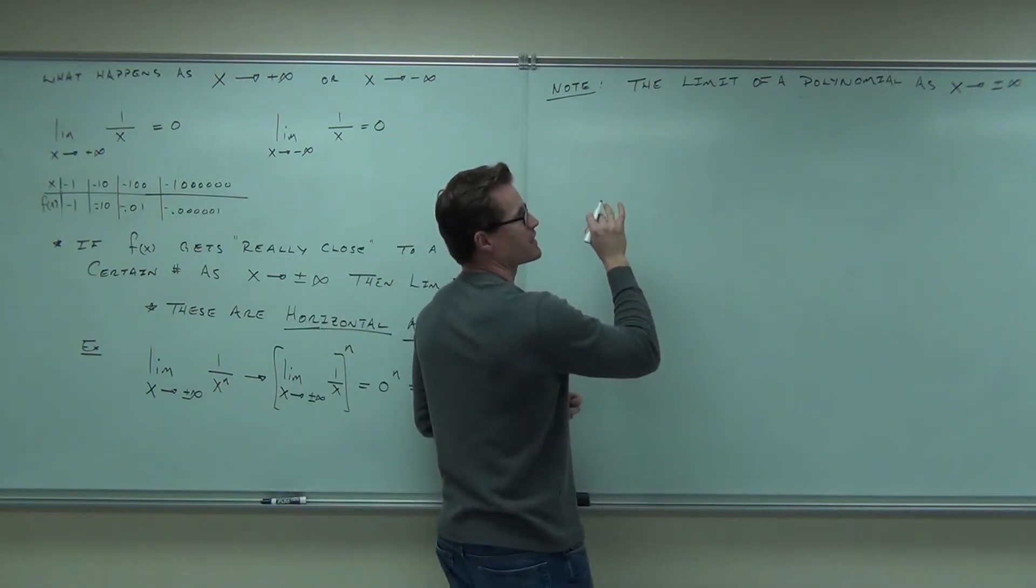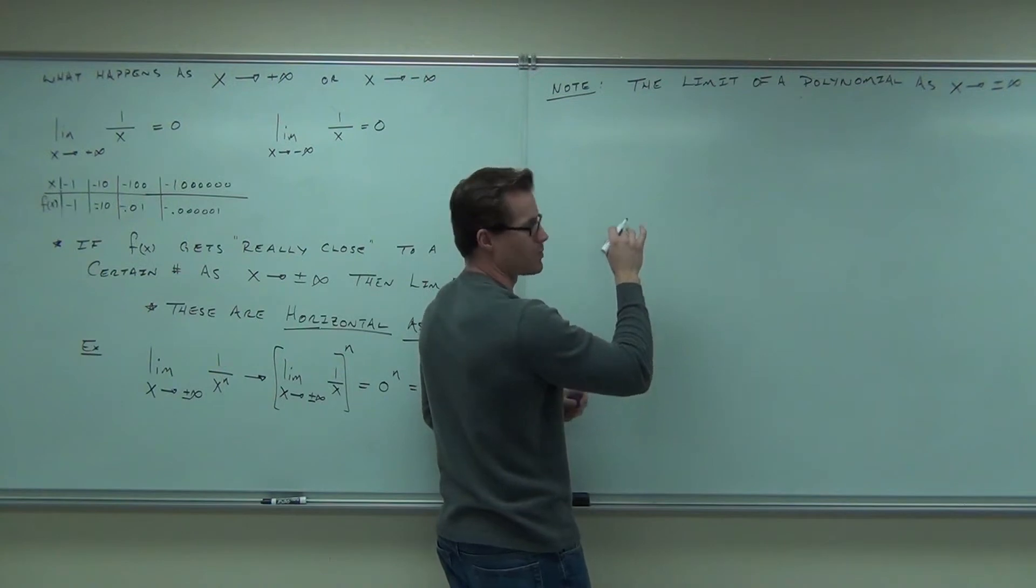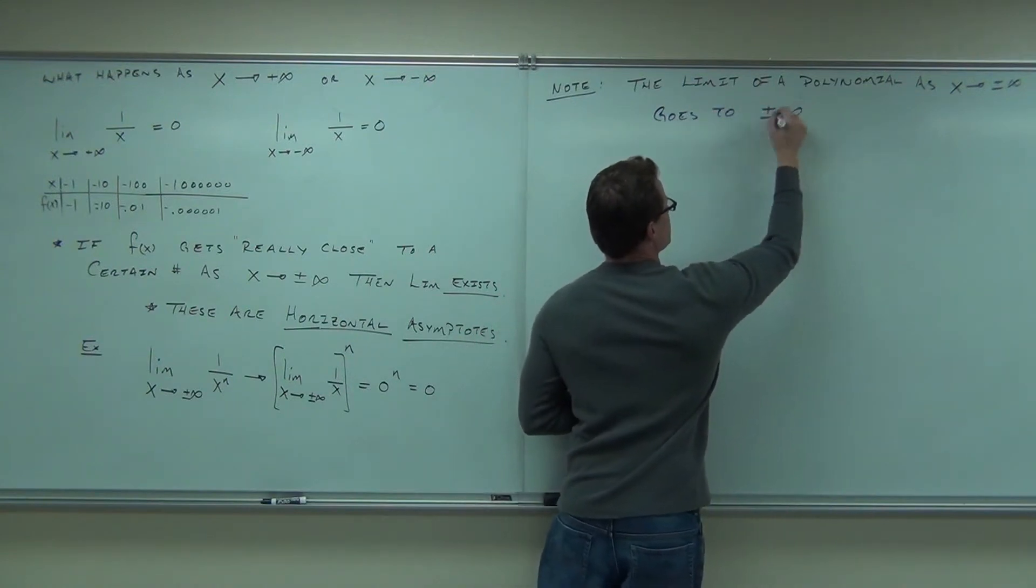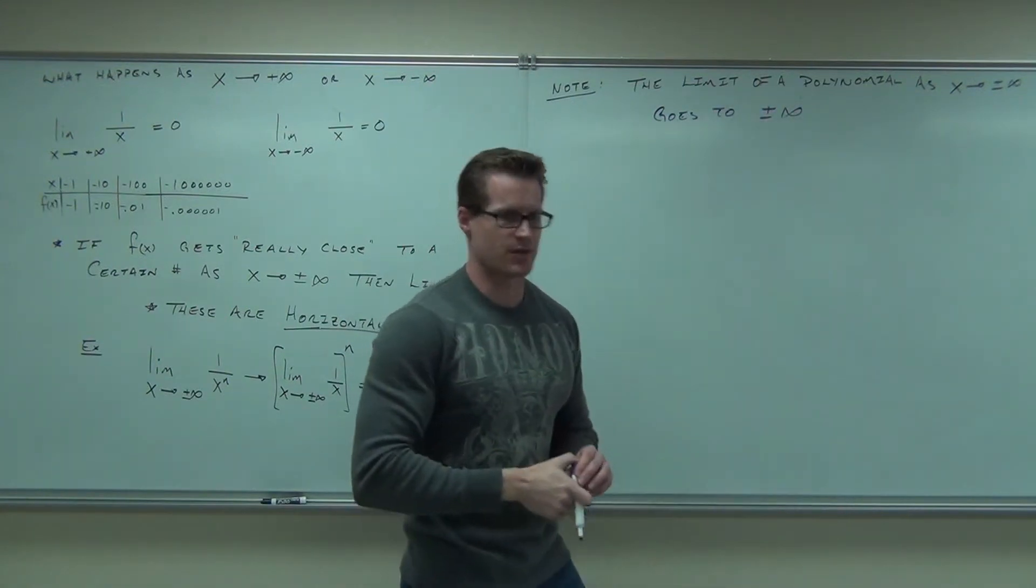The limit of a polynomial as x approaches negative infinity or positive infinity goes to positive or negative infinity itself. I'll give you some examples of this.